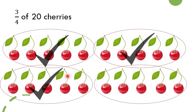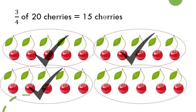Our answer will be the total number of cherries present in these 3 groups. Counting them: 5 in each group, then 10, and another 5 gives us 15 cherries. So this is how we find out what is 3 by 4 of 20 — it is 15 cherries.